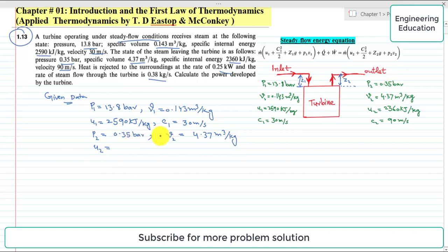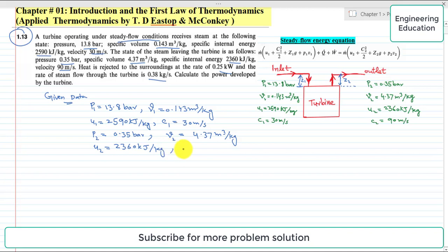Specific internal energy at the exit of the turbine is 2360 kilojoules per kilogram. Because heat is converted to work output or power output, the value of u decreases. Velocity c2 is 90 meter per second — the velocity increases from 30 to 90 meter per second while a pressure drop occurs.